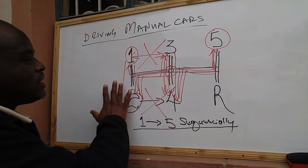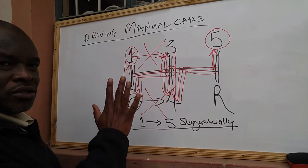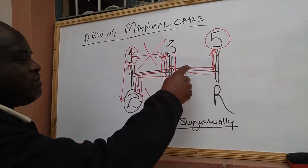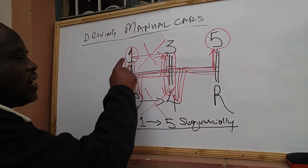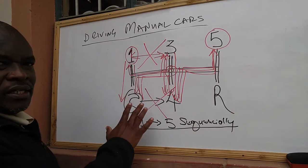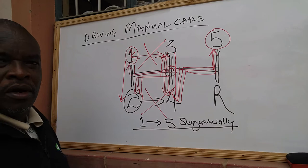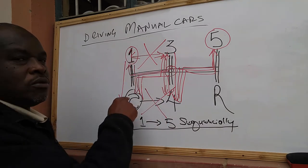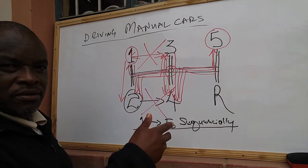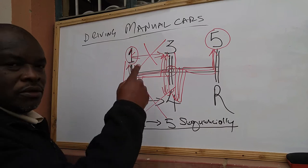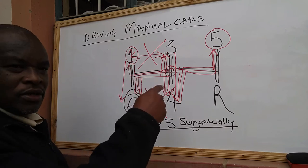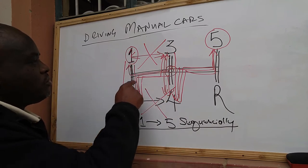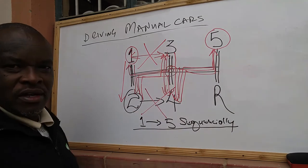When you're slowing down completely and not stopping, you must downshift from five, four, three, two, one, and then stop the car when it is safe to stop or proceed with your journey. When you increase speed again, you must move from number one to number two, to number three, to number four, to number five. That's how we shift the gears.